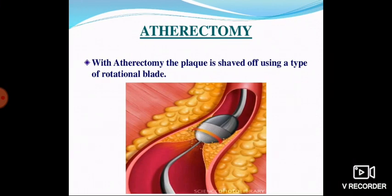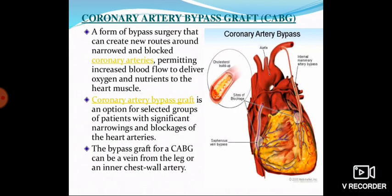The second surgical option is atherectomy. With atherectomy, the plaque is shaved off using a type of rotational device and removed from the coronary artery.